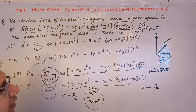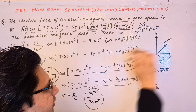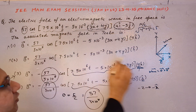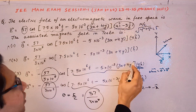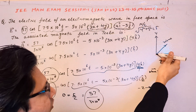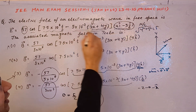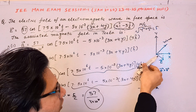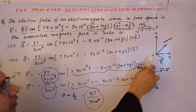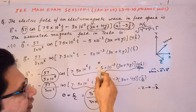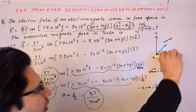The second term in the cosine argument gives the direction of the electromagnetic wave. If it is 3x + 4y with a minus sign, then the wave moves in the positive 3x + 4y direction. If it were just 3x with a plus sign, the wave would move in the negative x direction. So the minus sign with 3x + 4y means the wave propagates in the 3x + 4y direction.